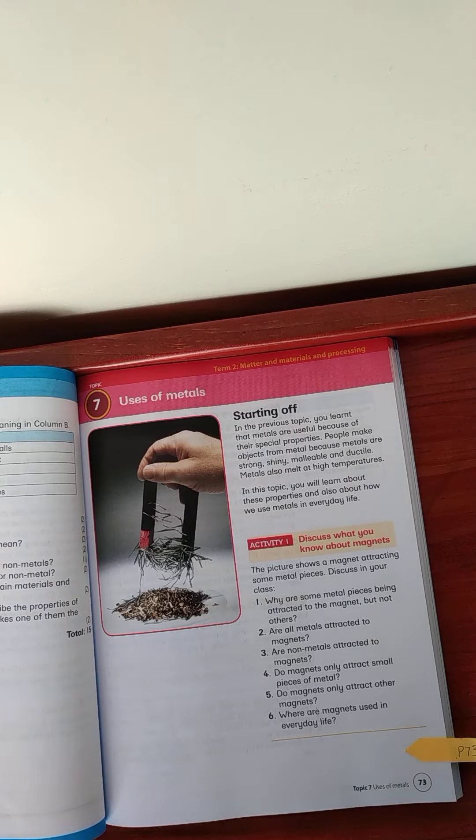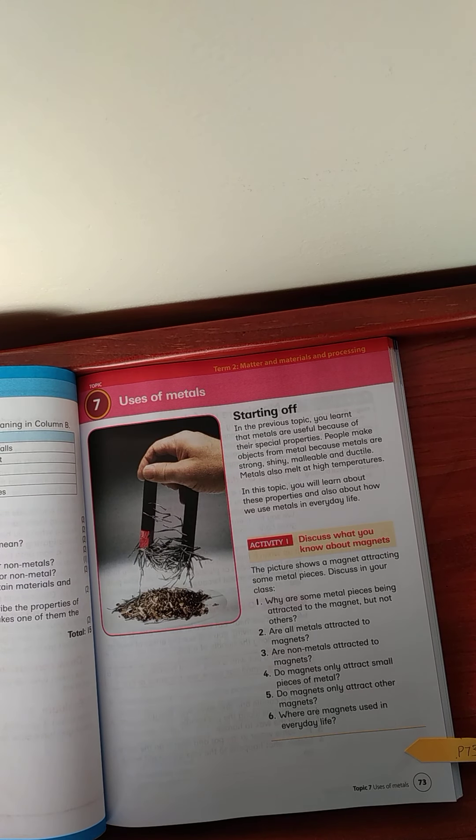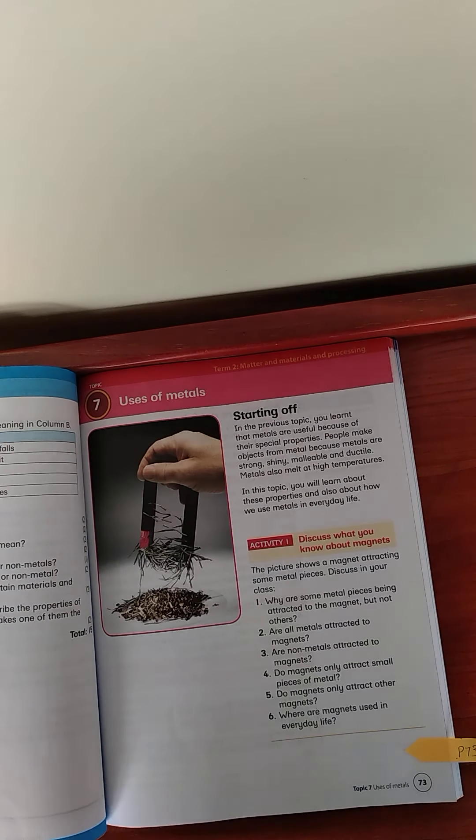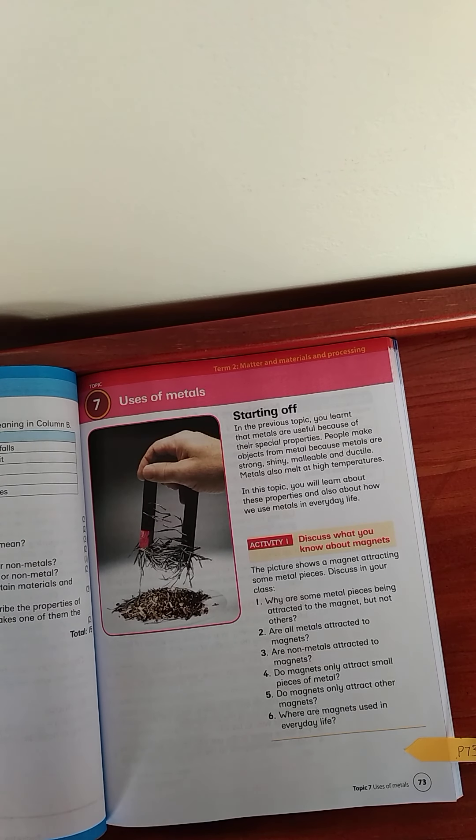Starting off. In the previous topic, you learned that metals are useful because of their special properties. People make objects from metals because metals are strong, shiny, malleable and ductile. Metals also melt at high temperatures. In this topic, you will learn about these properties and also about how we use metals in everyday life.